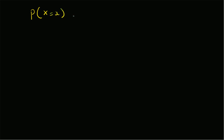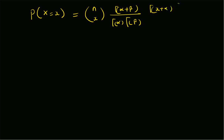Hello, welcome. In this short video, let us look at the derivation of the variance of a random variable following a beta binomial distribution. The probability mass function of a beta binomial random variable is given by: P(X = x) = nCx times gamma(α+β) divided by the product of gamma(α) and gamma(β), times gamma(x+α) times gamma(n-x+β), divided by gamma(α+β+n).